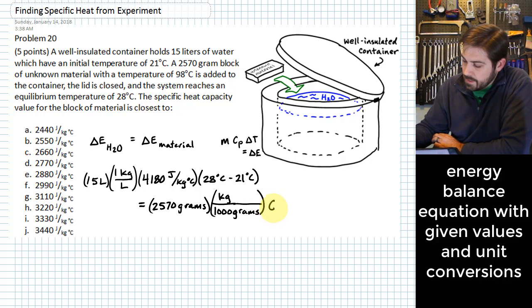Okay, then specific heat capacity for this material—that's what we're trying to find—and then lastly we have the change in temperature, and we're actually going to express this one as 98°C minus 28°C.